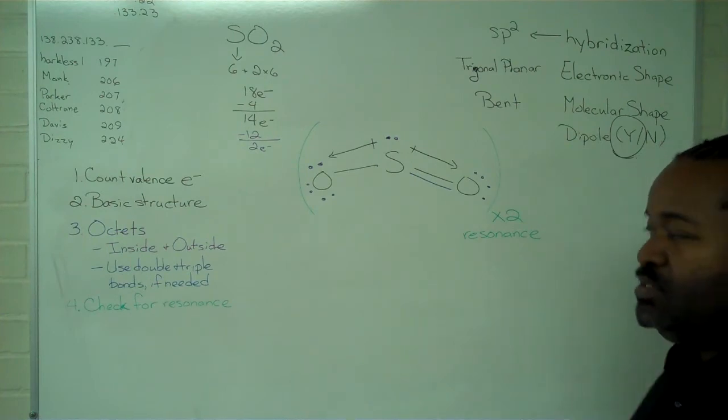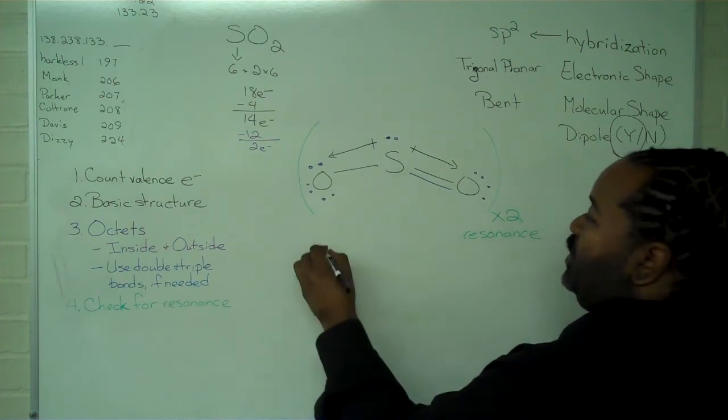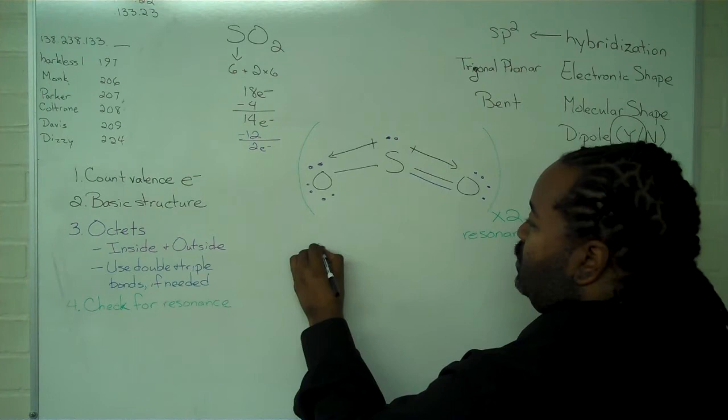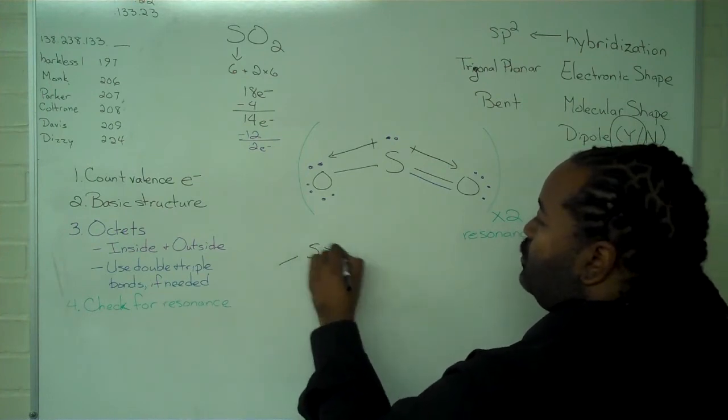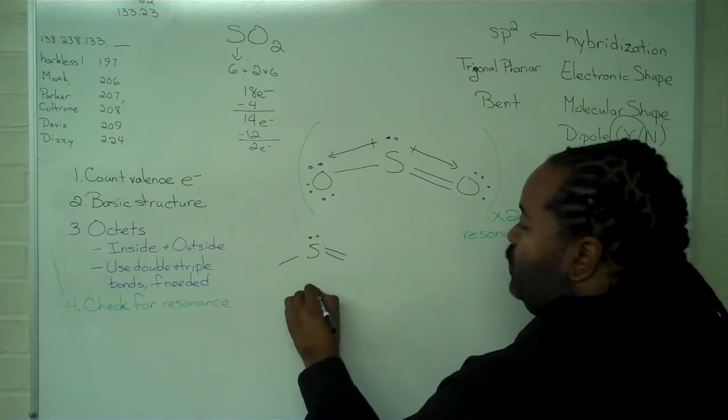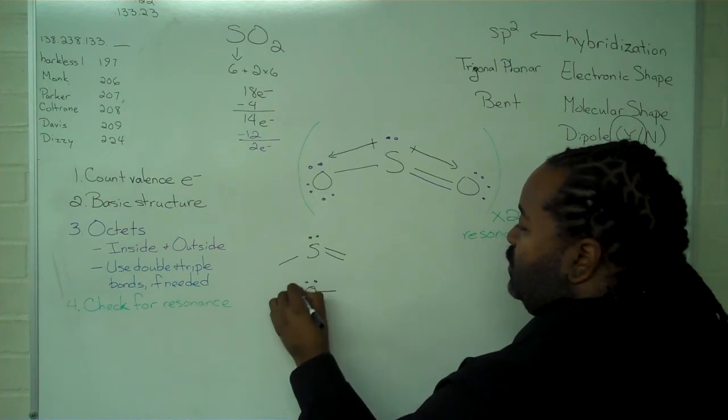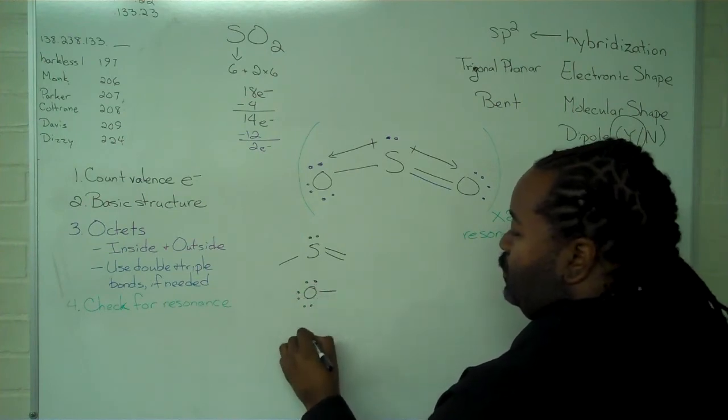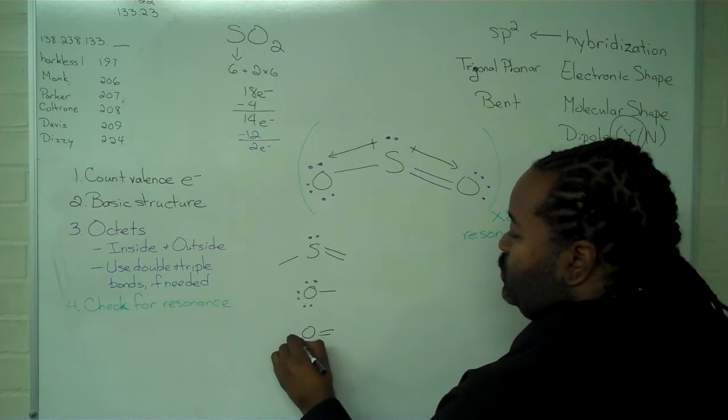And so now that we've determined that there's a dipole, the only thing left to do is assign a formal charge. We have 3 atoms with unique arrangements of electrons around them. And so we can draw representatives of these 3 and determine a formal charge for each.